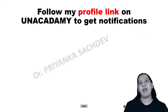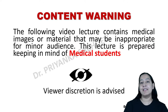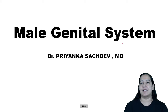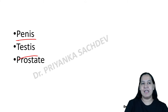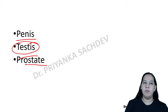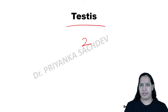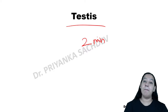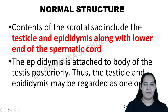Let me start with today's topic — the male genital system. I will cover all three organs: penis, testis, and prostate. Starting with testis. Before beginning the tumors, let me give a two-minute brief review of the normal anatomy and histology of the testis for better understanding.